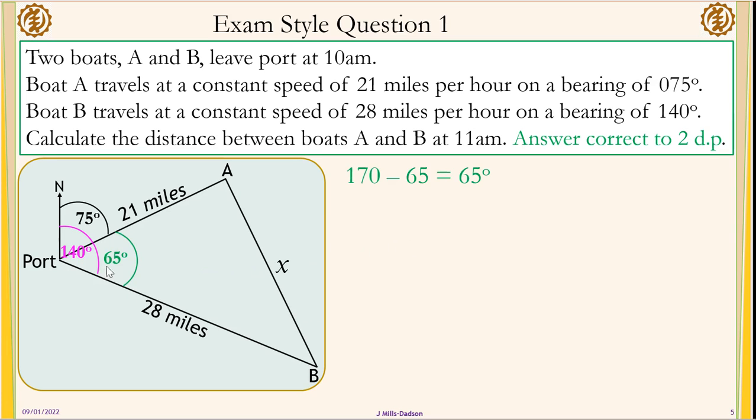Now we know that this is 65 because the whole angle here is 140. If this bit is 75, 75 from 140 will give us 65. So I now know my included angle.